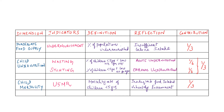The second dimension is child undernutrition, with two components: wasting — percentage of children under 5 with low weight for height, reflecting acute undernutrition — and stunting — percentage of children under 5 with low height for age, reflecting chronic undernutrition. Each of these two components contributes one sixth, so child undernutrition as a whole contributes one third to the GHI. The third dimension is child mortality, with the indicator being under-5 mortality rate, reflecting inadequate food intake and unhealthy environment, contributing one third to the GHI.